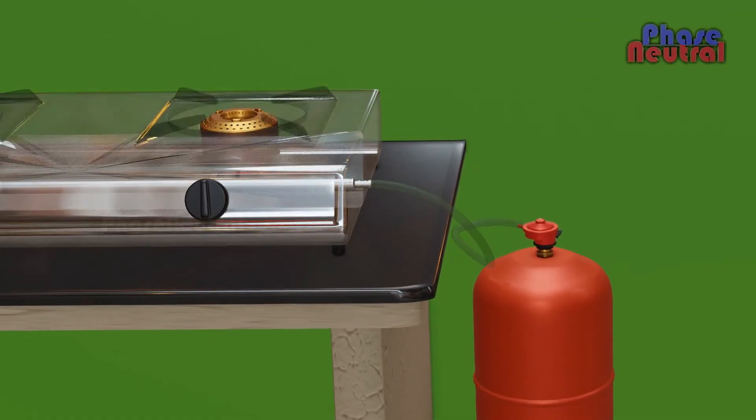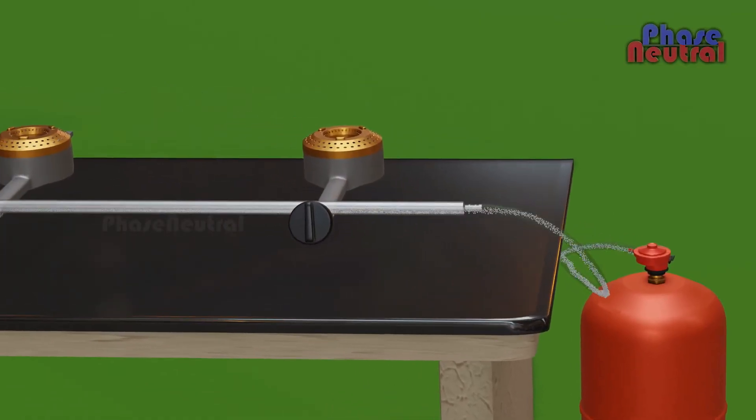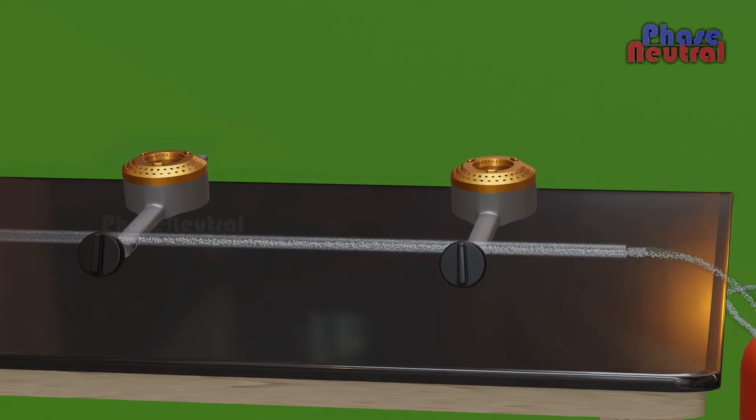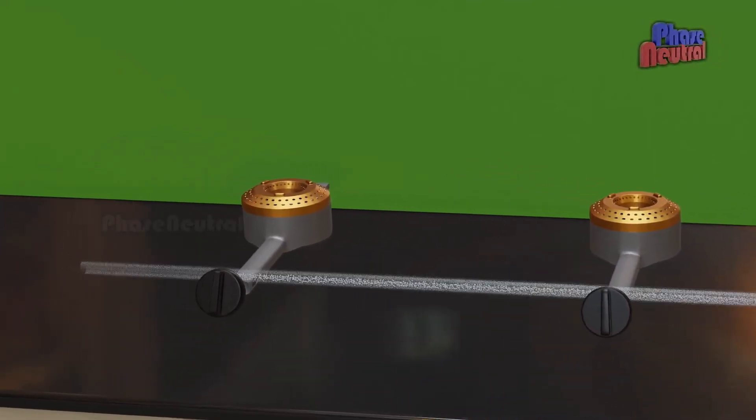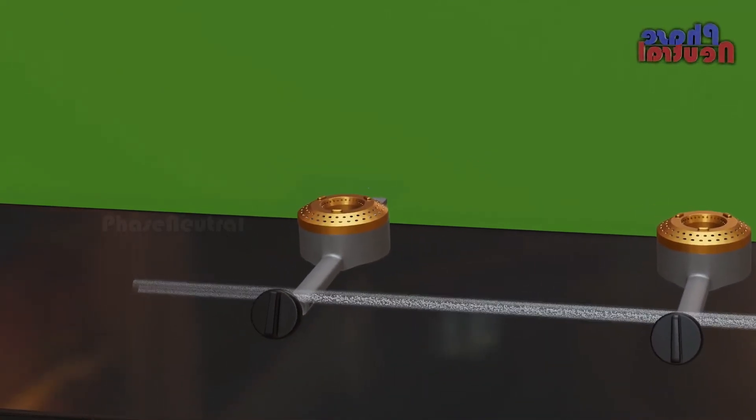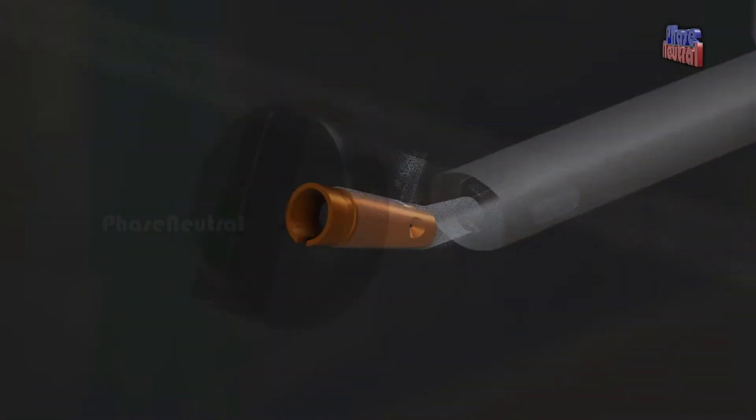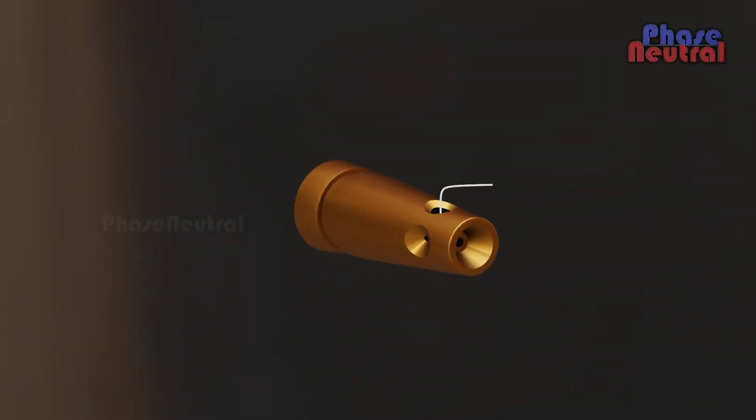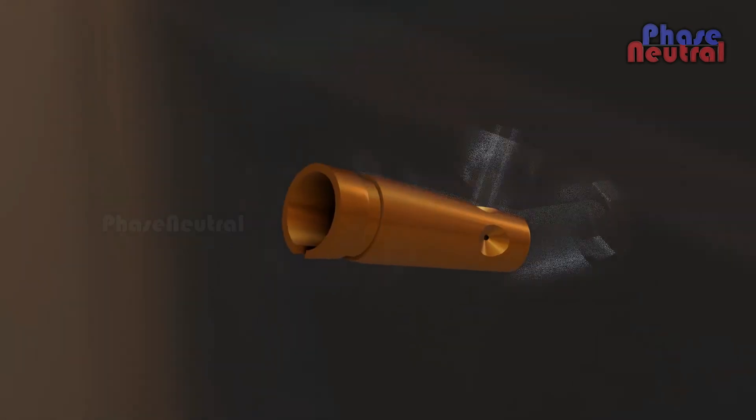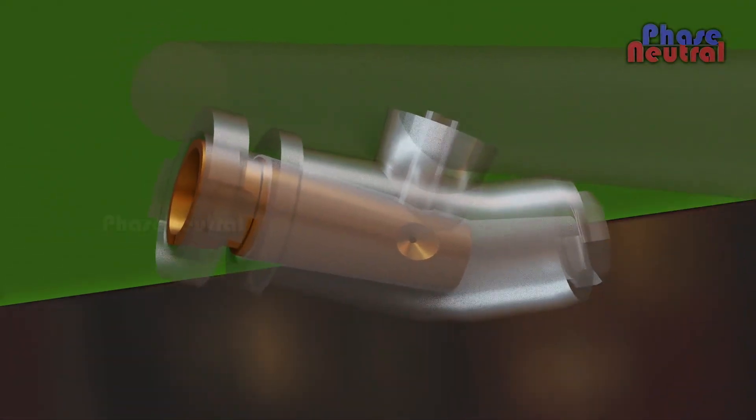The gas flows from the regulator to the gas stove through the hose connected between them. This gas reaches the on-off knob through the steel pipe of the gas stove. Here you can see a valve inside the rotating knob. It has two holes, one is big and one is small. The big hole is for high flame and the small hole is for low flame.